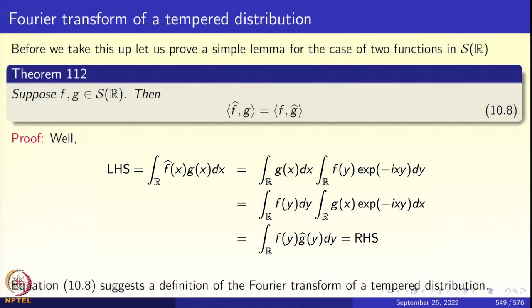This is possible because of duality results. Before we take up the definition of Fourier transform of a tempered distribution, we proved a little lemma last time. Let us recall what this lemma says. Look at slide theorem 112. If f and g are in the Schwarz space S of R, then the f-hat g pairing is the same as the f g-hat pairing. That is a straightforward application of Fubini's theorem — the proof simply writes itself out.